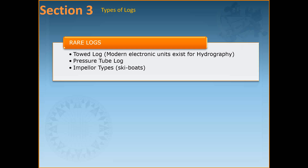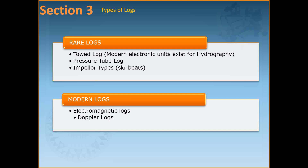The types of logs shown earlier — the towed log and the chip log system — are all obsolete now. The current logs in use are electromagnetic logs and Doppler logs. This video covers only the electromagnetic logs; the next video will cover Doppler logs specifically. Logs are normally classified as towed logs or bottom logs, and the towed logs are now obsolete.